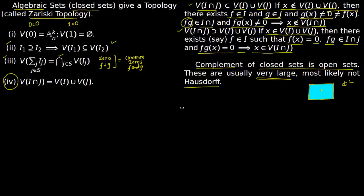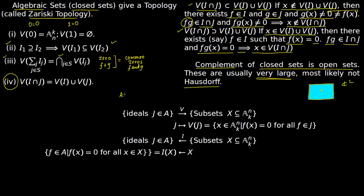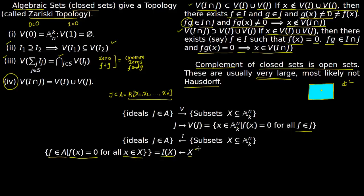Now we come to the correspondence between vanishing sets V and ideals I. You take an ideal J in the ring A = K[X₁, X₂, ..., Xₙ] and apply the vanishing set to get an algebraic set. Conversely, you take a subset X and make an ideal I(X) out of it — the set of all polynomials in A which vanish simultaneously on X. So you can take an algebraic set and convert it into an ideal, or take an ideal and convert it into an algebraic set.